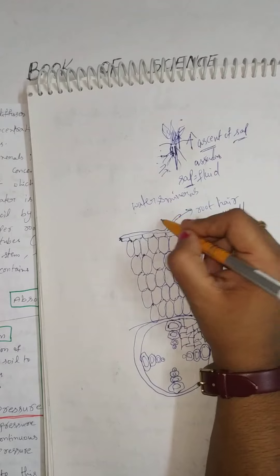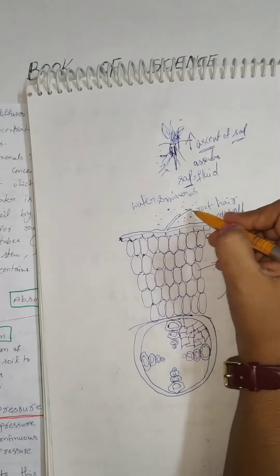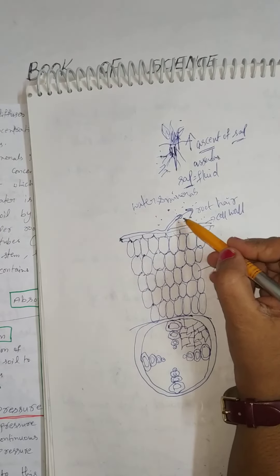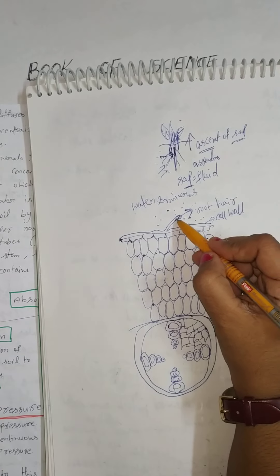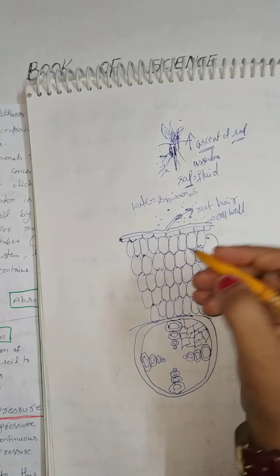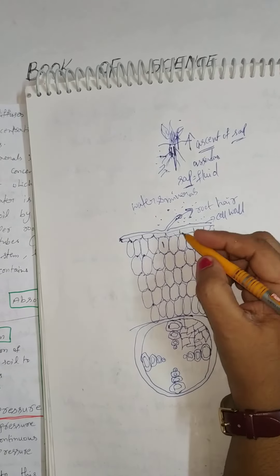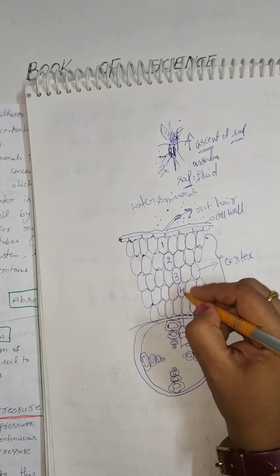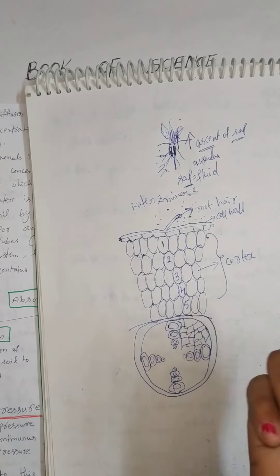This is root hair. It means this is soil. Root hair specialty: root hair has a larger surface area, and it only allows liquid or water. It has high concentration. For your neat observation, I will give numbers: 1, 2, 3, 4, 5 — then it comes into the xylem.